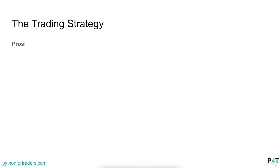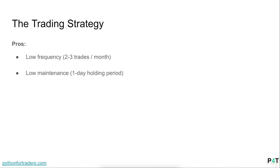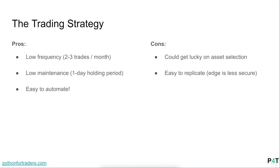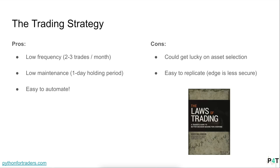Let's get into some pros and cons. The pros are that it's very low frequency — we're only going to do two or three trades a month, so it's very low maintenance. We also only have a one-day holding period, so you could even do this by hand if you wanted to, but it's also very easy to automate — super friendly for beginners. The cons are that we could just get lucky on asset selection; it could be that our timing has nothing to do with it. And another con is that this is very easy to replicate. Basically, the easier it is to replicate a strategy, the less secure the edge.